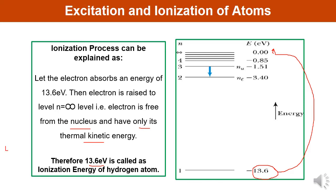Let us take one more example. If an electron absorbs 25 electron volts, this energy is more than sufficient to remove the electron from the atom, since only 13.6 electron volts is needed for ionization. The additional energy, which is 25 minus 13.6 equals 11.4 electron volts, is the kinetic energy the electron possesses after being freed. This is all about the excitation and ionization of atoms.